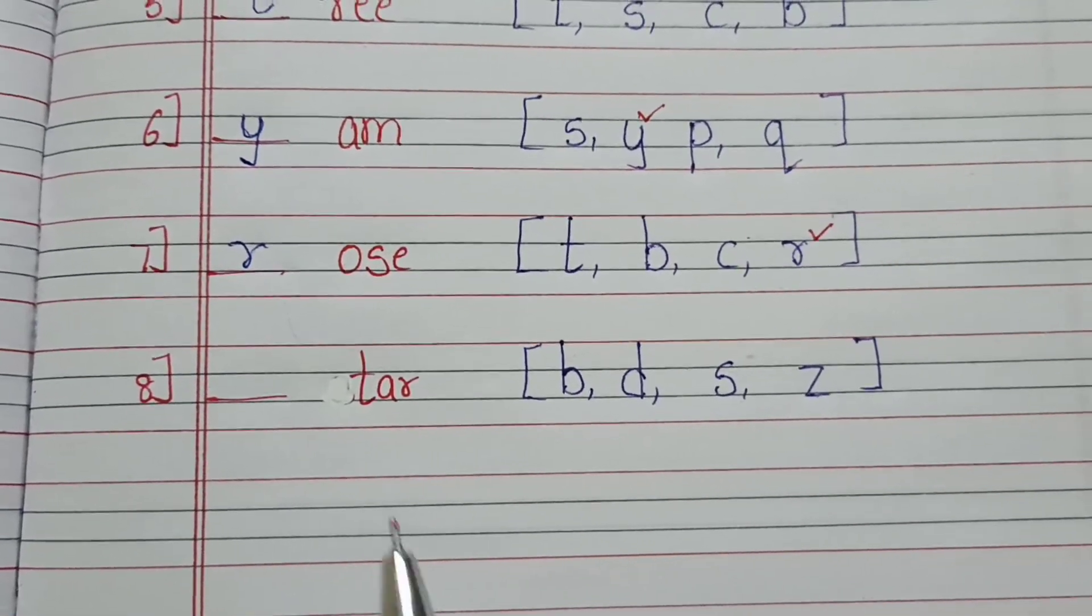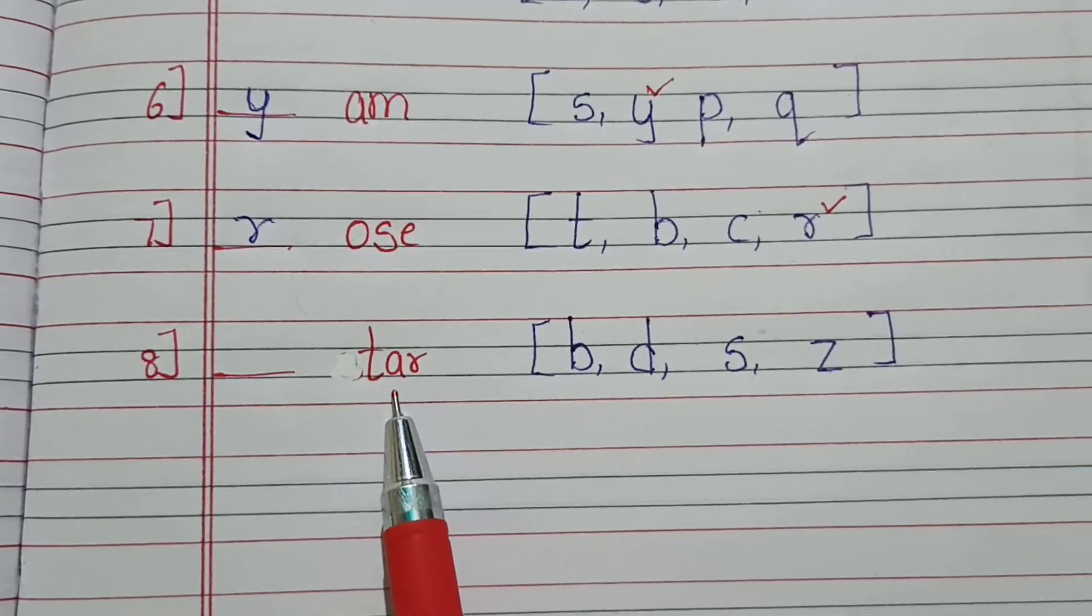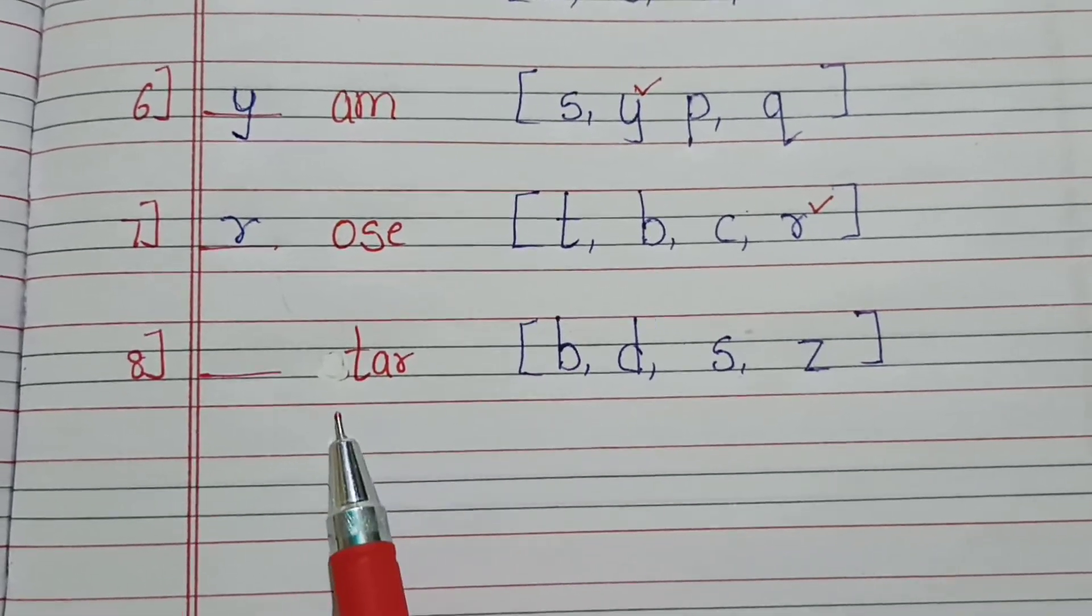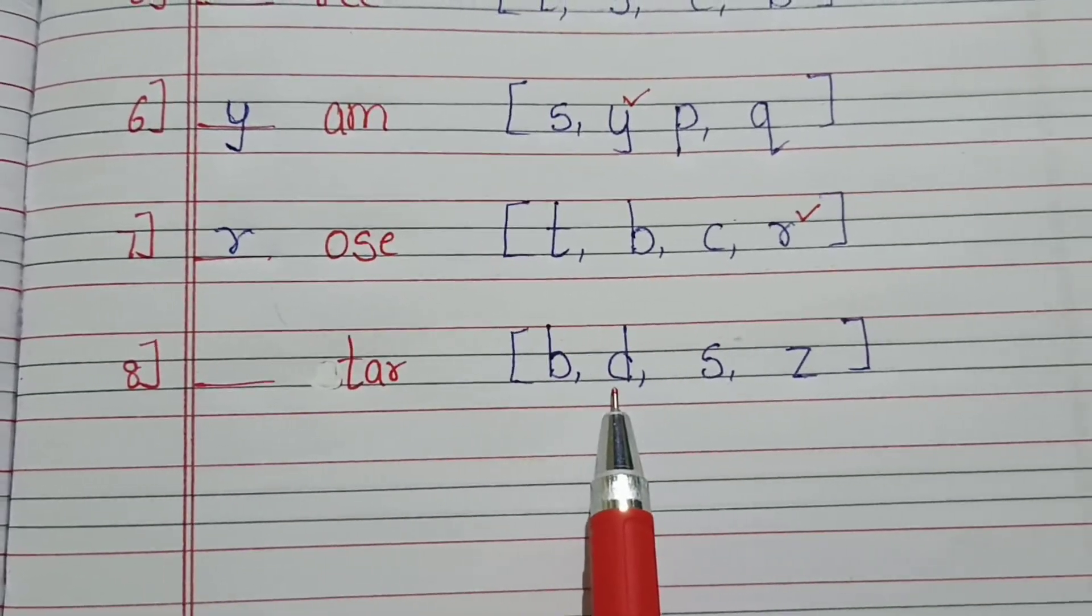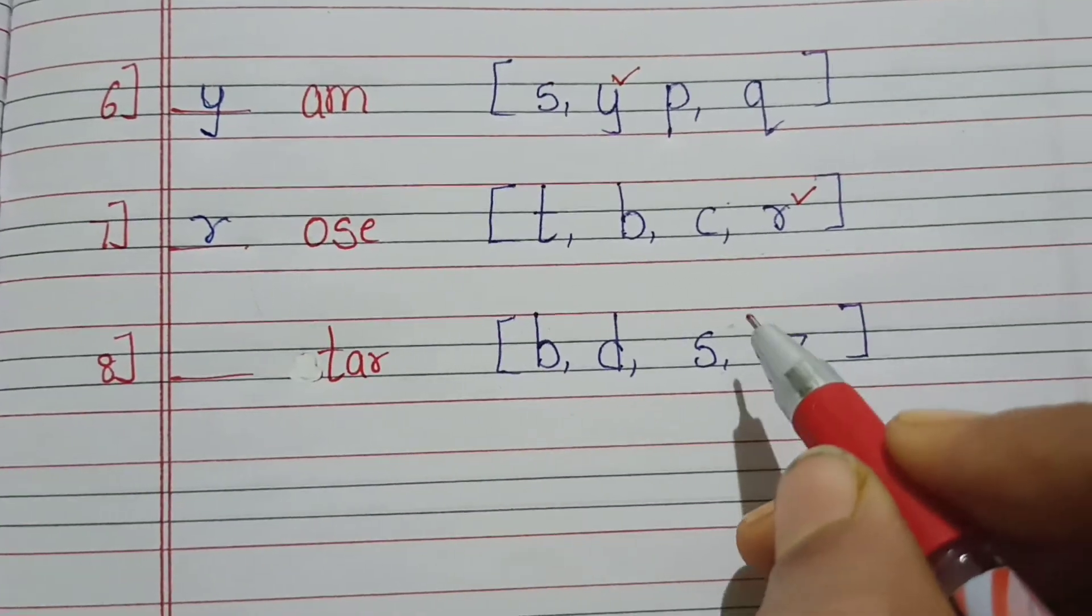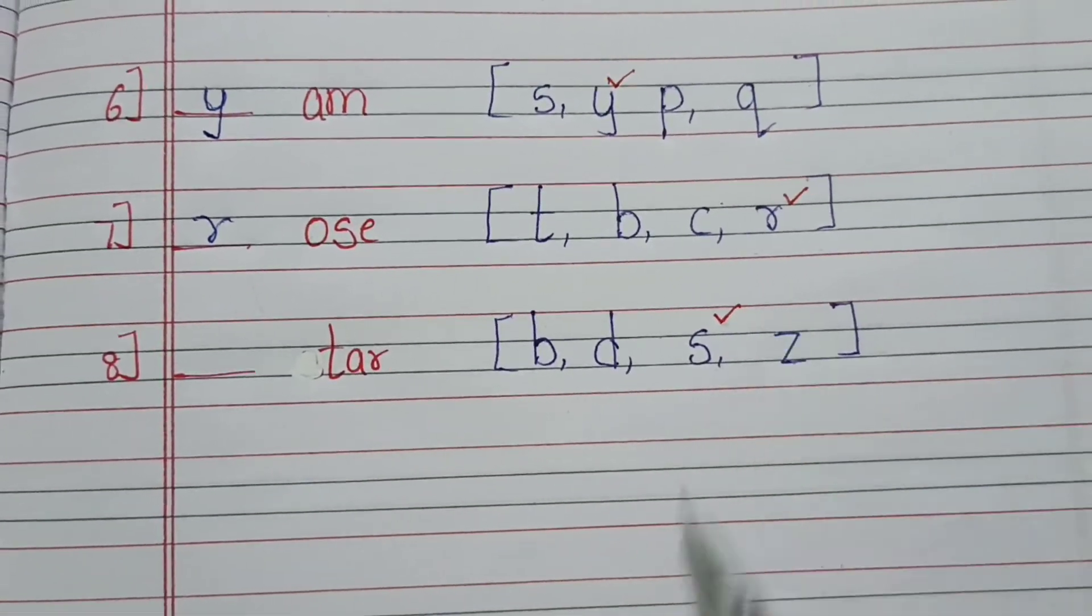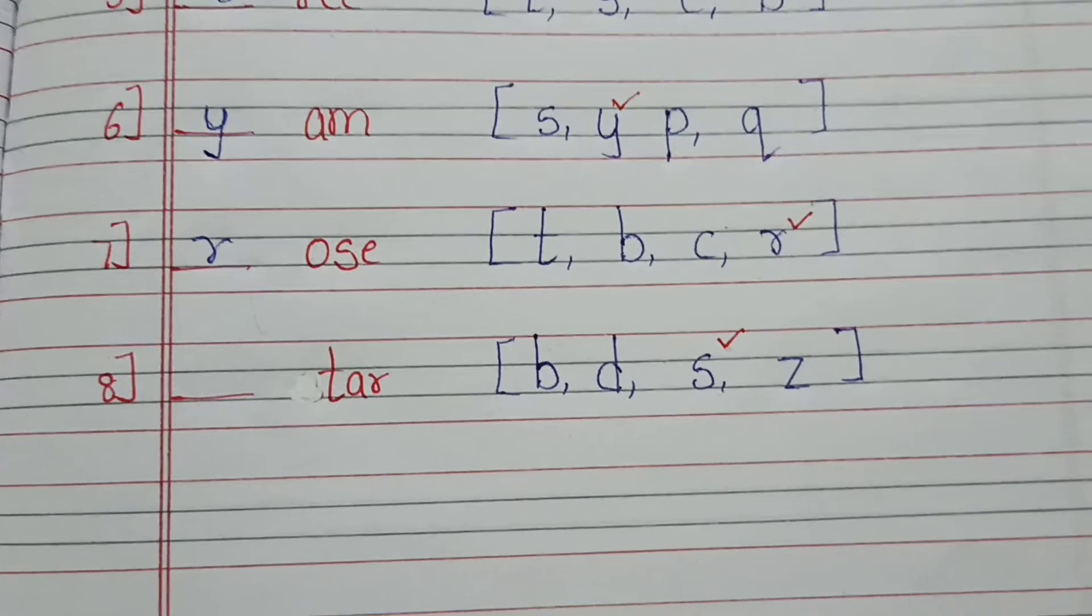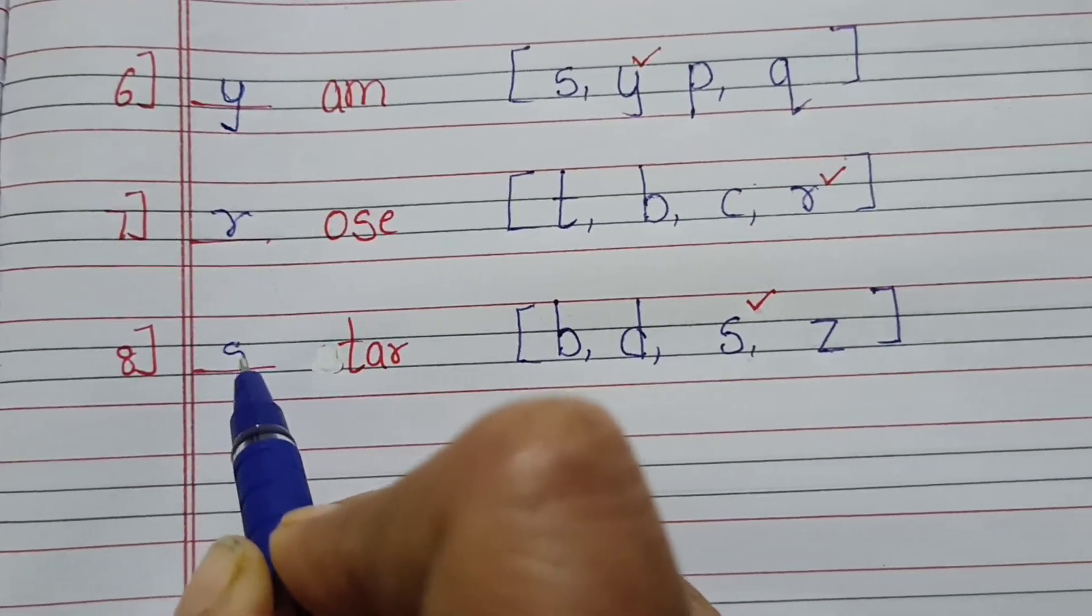Next one is dash T A R. B, T, A, R, no. D, no. S, yes. Yes, S, T, A, R, star. Yes. Star is the correct answer. So we are going to write S here.